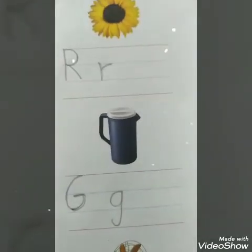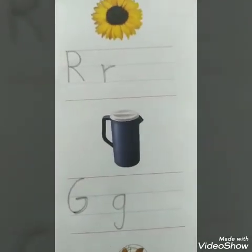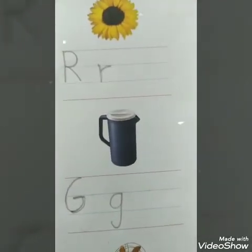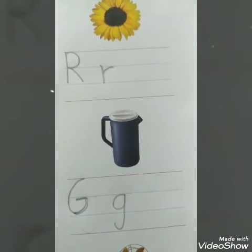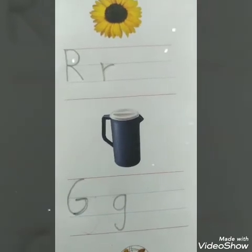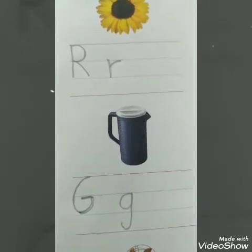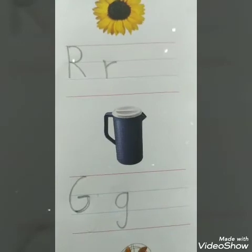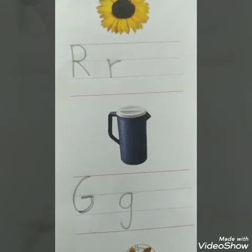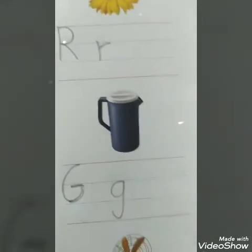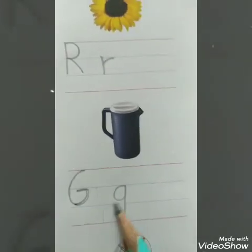What is this? JUG. Last letter of the sound is G — like G. Write here — Capital G and small g.